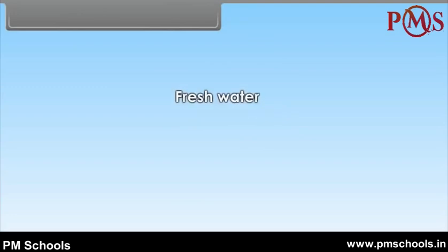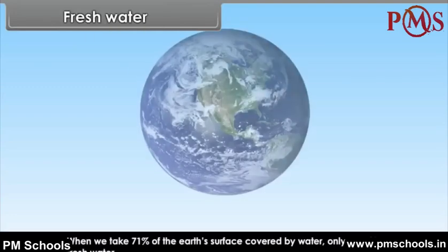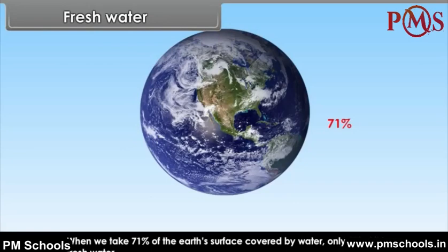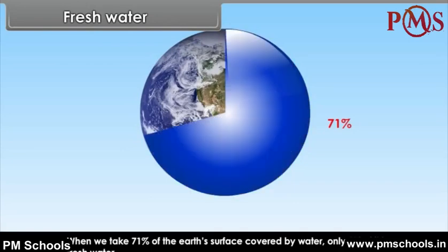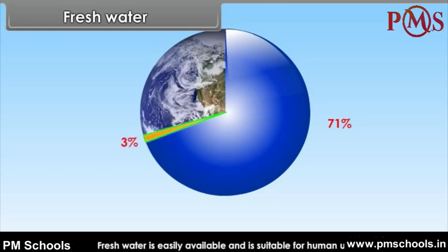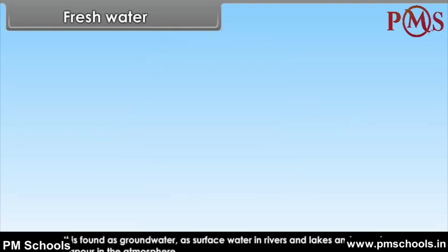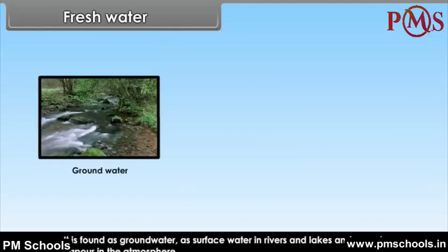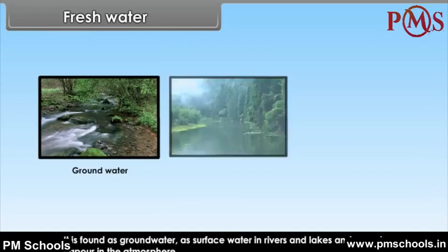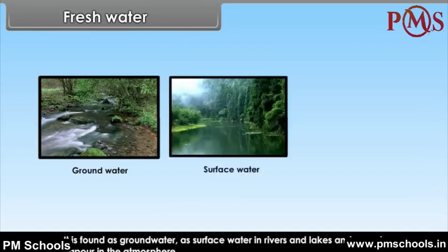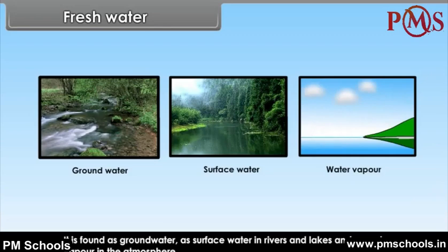Fresh water: when we consider the 71% of the Earth's surface covered by water, only 3% of it is fresh water. Fresh water is easily available and suitable for human use. It is found as groundwater, as surface water in rivers and lakes, and as water vapour in the atmosphere.